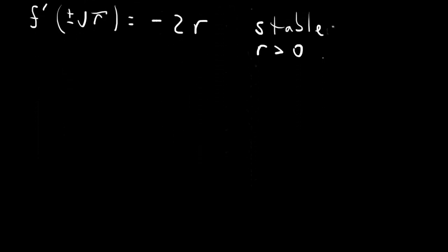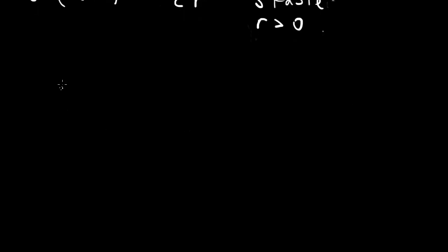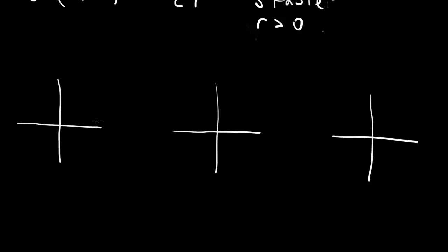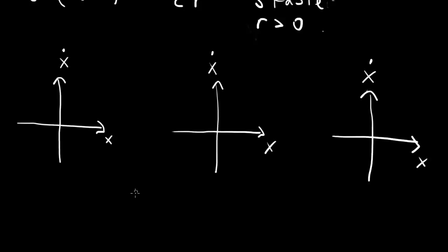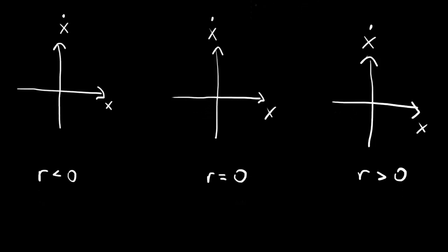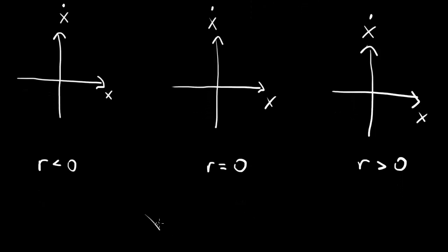Let's draw some graphs to see what's going on. I'm going to draw three graphs plotting x-dot versus x: one for negative r, one at the bifurcation point r equals 0, and one for positive r. Remember our function is x-dot equals rx minus x cubed.